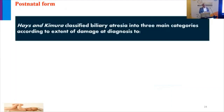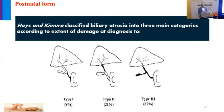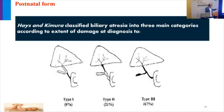Chemoura classified biliary atresia anatomically into three types. Type 1, unfortunately, carries the best prognosis after surgical correction, but its incidence is very low — only 3 to 5% of all cases. Type 2 involves obliteration including the common bile duct and both right and left hepatic ducts. Type 3 has the worst prognosis among all cases of biliary atresia; obliteration includes extra- and intrahepatic biliary ducts, but this is the most common type.